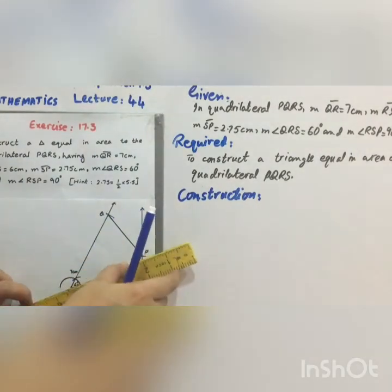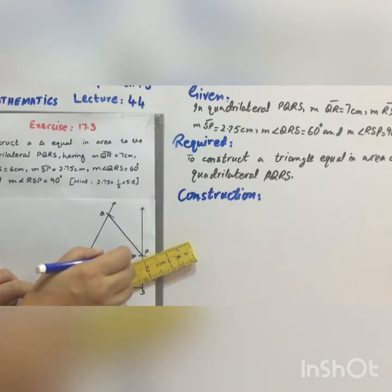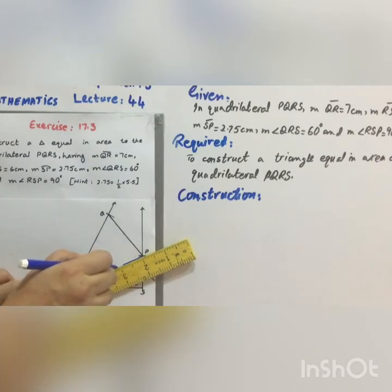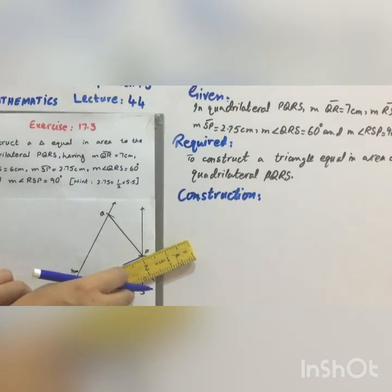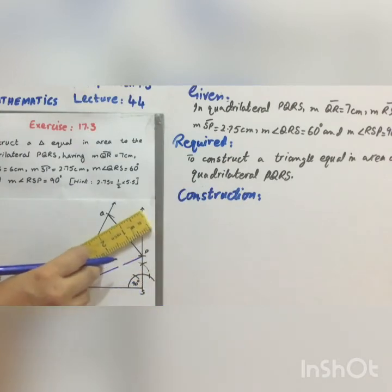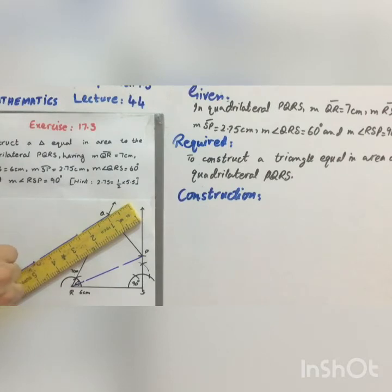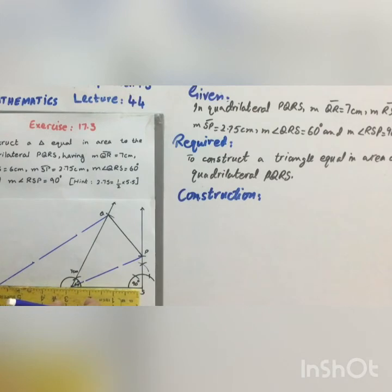Now draw the diagonal PR and draw a perpendicular line parallel to PR meeting RS produced at point T.